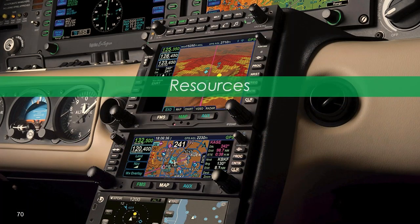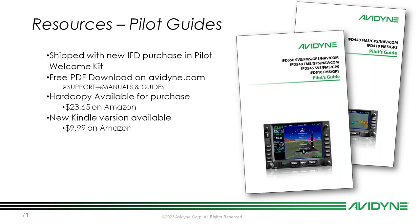Training resources — we have a ton of them and have come out with a lot of newer ones. New pilot guides were released for all of our IFDs, shipped with new IFD purchases in the pilot welcome kit. We have a free PDF download available including software version 10.3.0.2 — go to avidyne.com, click support, then manuals and guides, find your IFD, and download the PDF. Hard copies are available on Amazon for $23.65, and there is a Kindle version for $9.99. We've also re-released quick reference guides for our IFDs, available with new IFDs from the factory in the pilot welcome kit, in both 5-series and 4-series versions. Free PDF downloads are on avidyne.com under support/manuals. Hard copy is $14.99 on Amazon, and the Kindle version is $4.99.